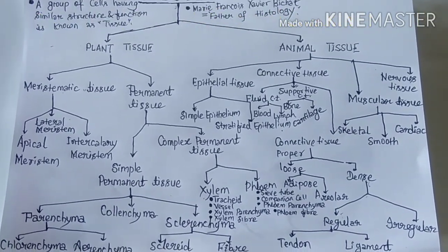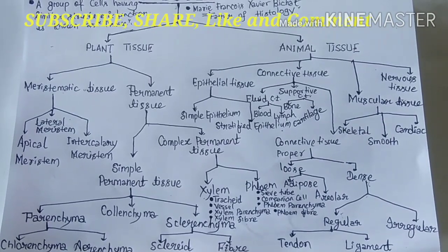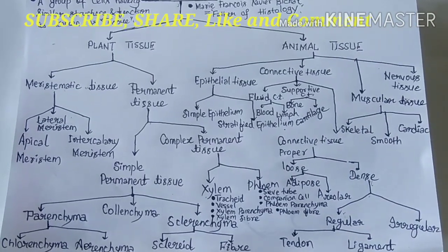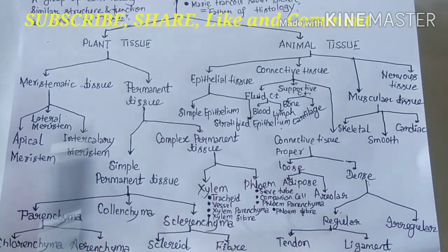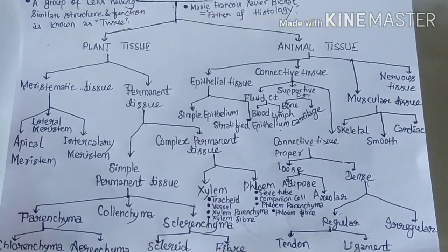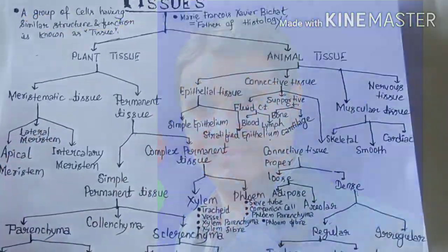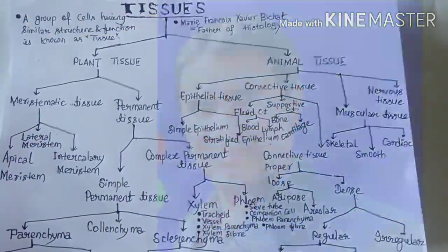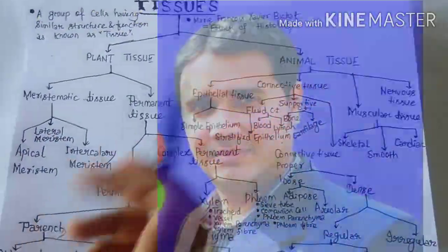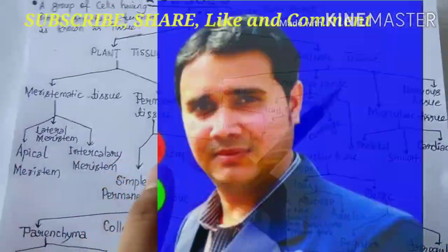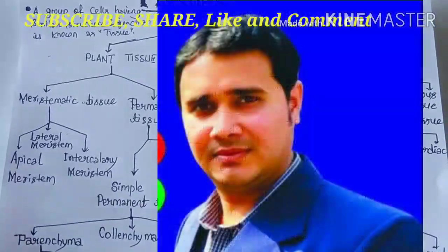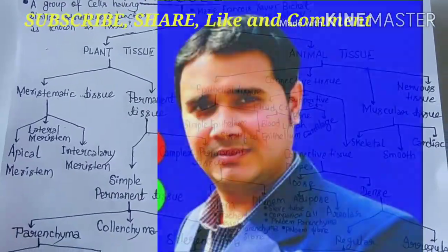Now let us talk a little about animal tissue. There are four categories of animal tissue: the first is epithelial tissue, the second is connective tissue, the third is muscular tissue, and the last one is nervous tissue.